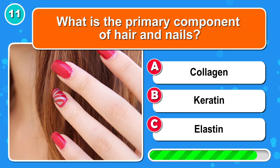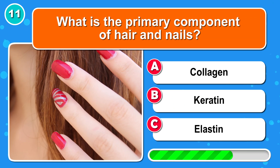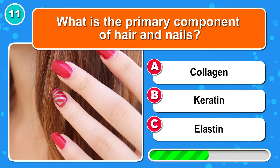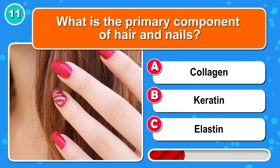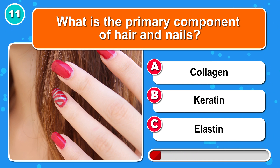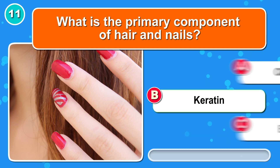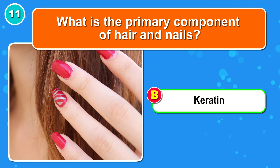What is the primary component of hair and nails? That would be B: keratin.